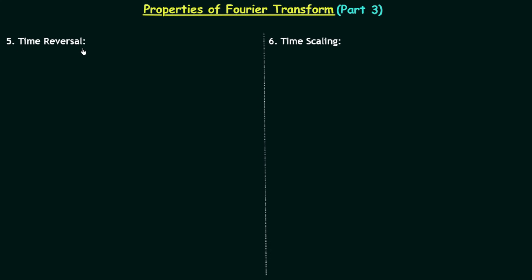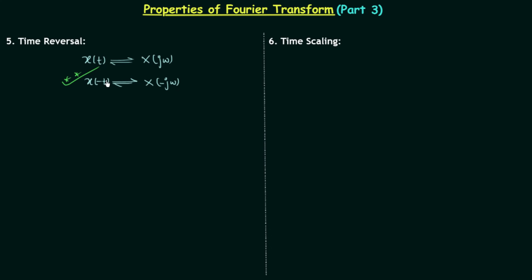The fifth property is time reversal. I will give you the property first and then we will prove it. If a time domain signal x(t) has Fourier transform X(jω), then after performing time reversal, the signal x(-t) has Fourier transform X(-jω). This is the time reversal property of Fourier transform, and now we will prove it.